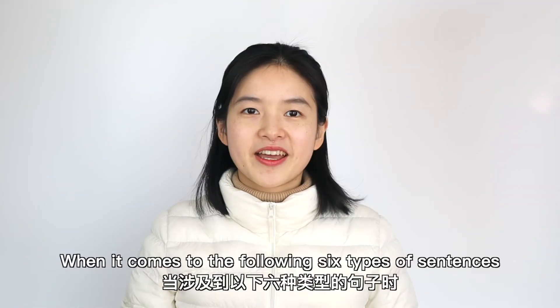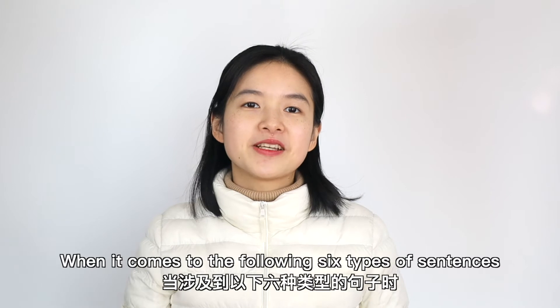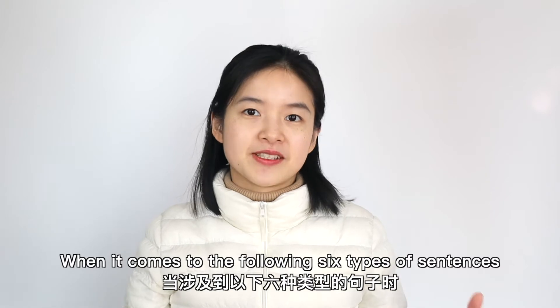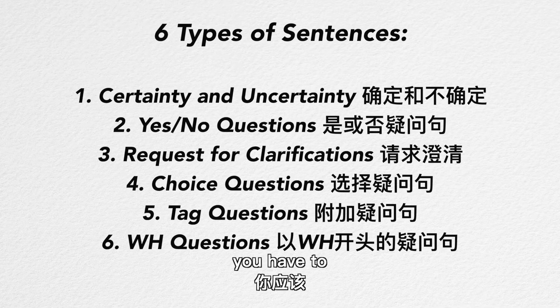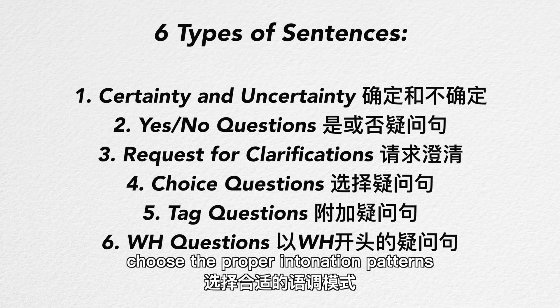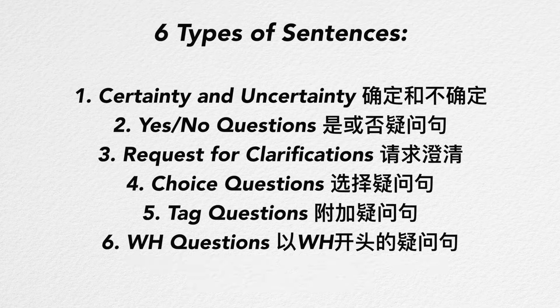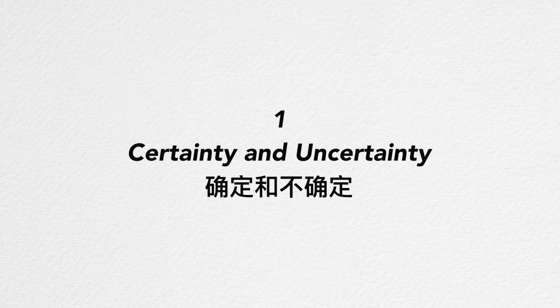When it comes to the following six types of sentences, you have to choose the proper intonation patterns. One: certainty and uncertainty.